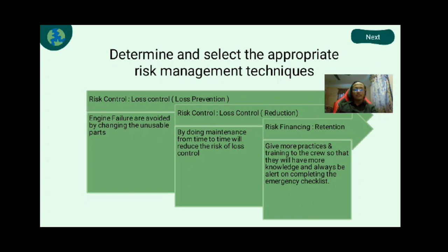To determine and select the appropriate risk management technique: the first is risk control loss prevention, where any failure is avoided by changing unusable parts. The second is risk control reduction, by doing maintenance from time to time to reduce the risk of loss. The last is risk financing retention, which gives more practice and training to the crew so they will have more knowledge and always be alert in completing the emergency checklist.